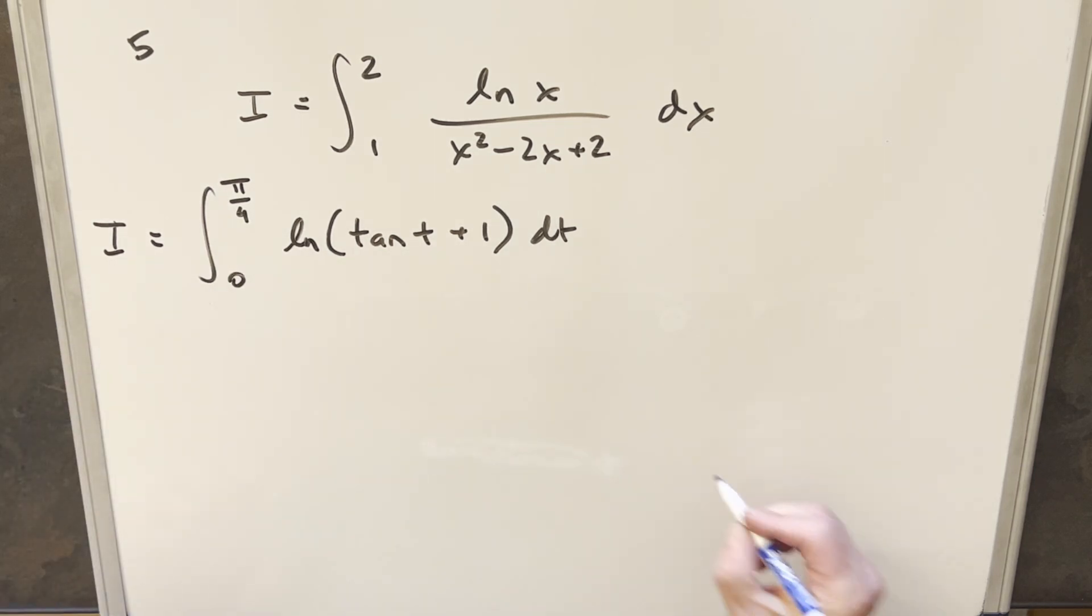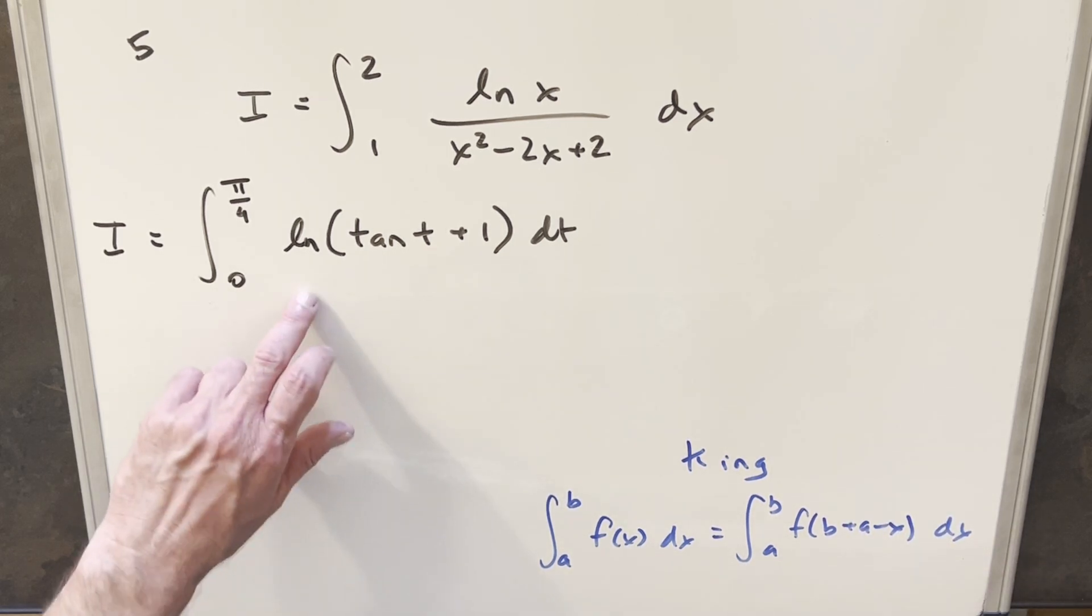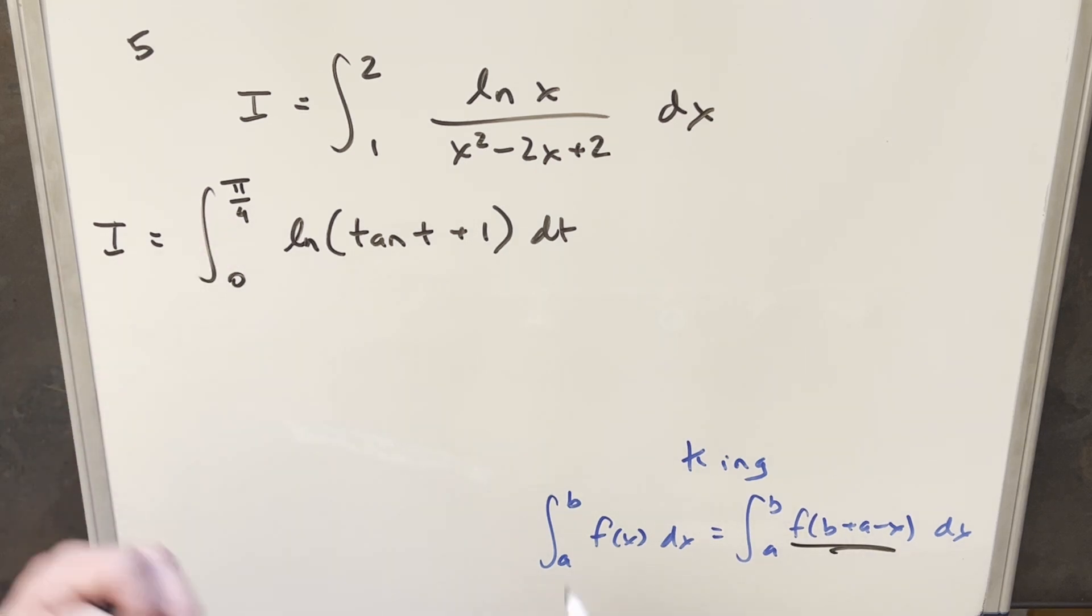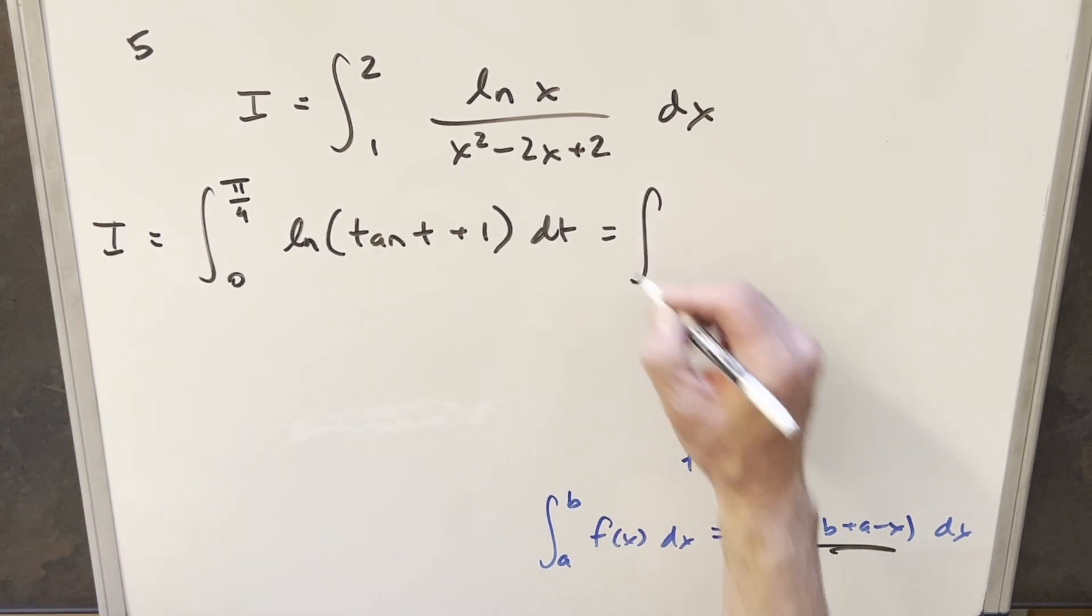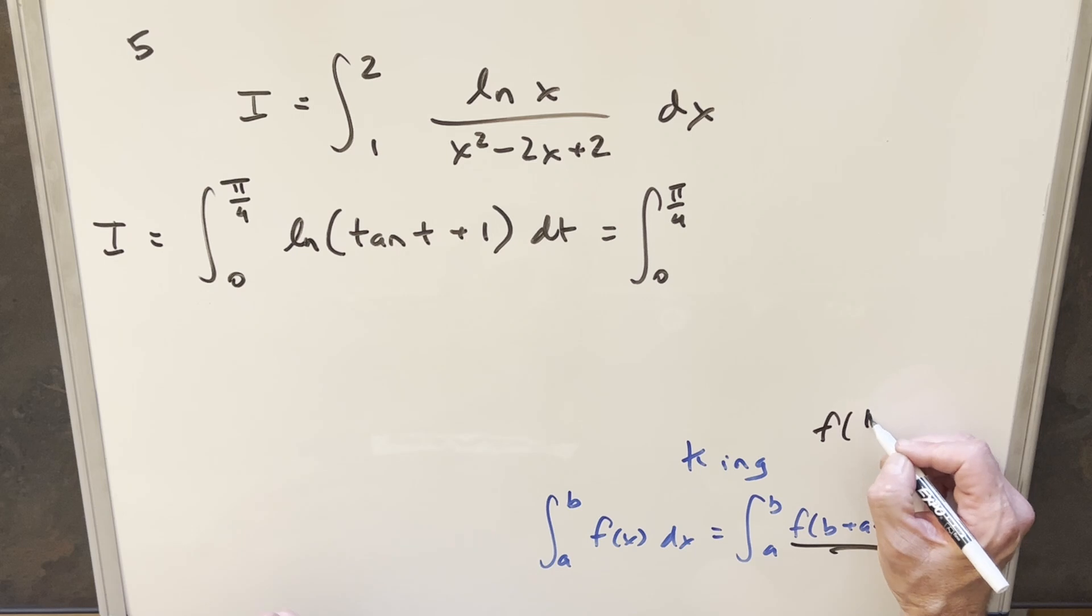And what I'm going to want to do on this is use King's principle, so let's just take a look at that really quick. What it's going to allow us to do is when we have the bounds from a to b of some function, this allows us to keep the bounds and then just input the sum of the two bounds. So it's going to be like f of b plus a minus x dx. So using this formula and what we have here, we're going to need this value, just adding the bounds together to rewrite this. So bounds staying the same, 0 to pi over 4. But then this becomes f of pi over 4 minus t.